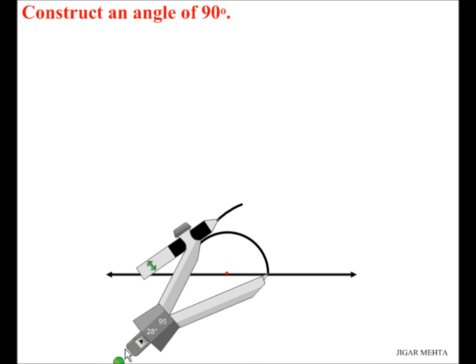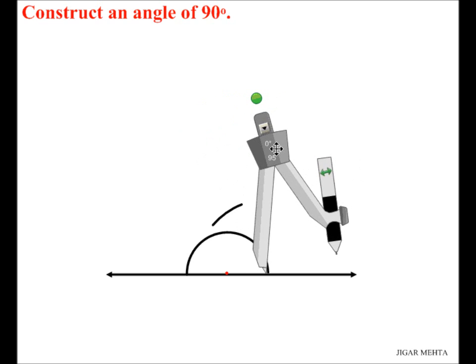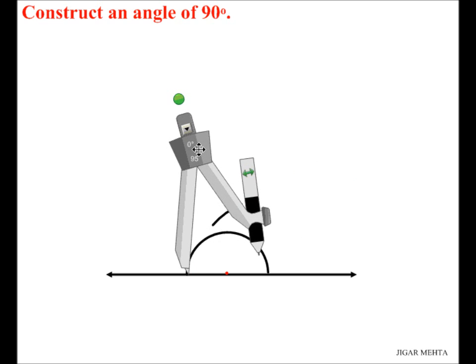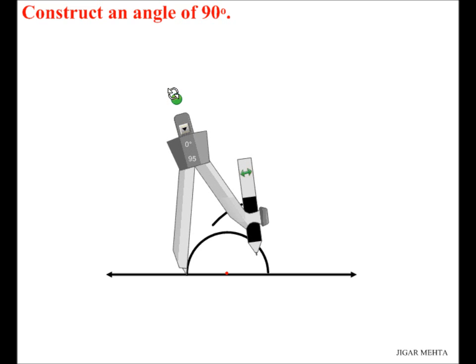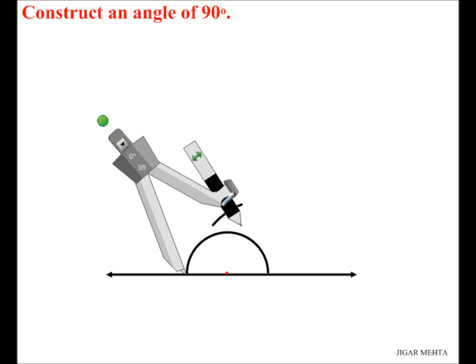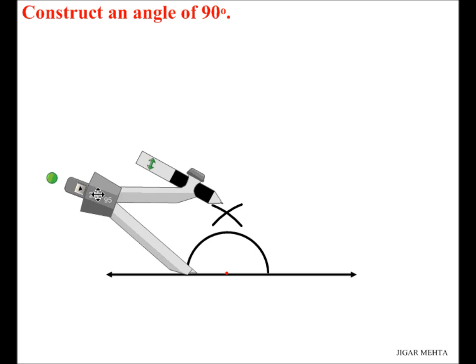And next, without changing the radius, I'm going to move the pointer here and construct another arc so that the previous arc is cut by the new arc. Now I'm done with my compass.